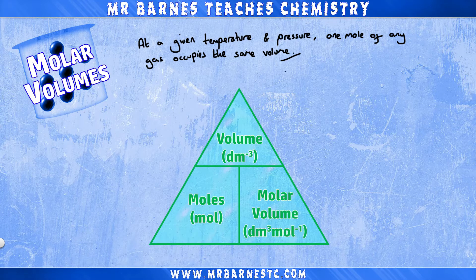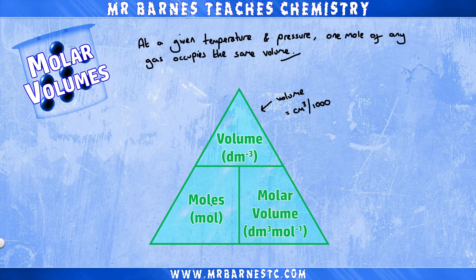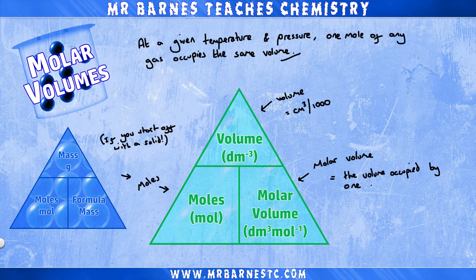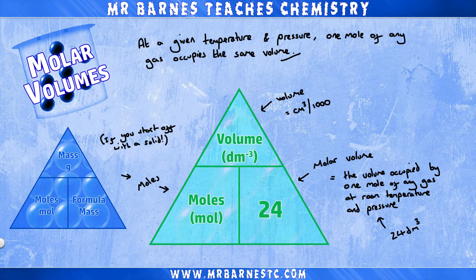To help you with any calculations around this, there's this magic triangle. It shows you volume in decimetres cubed — which is centimetres cubed divided by a thousand — moles in the bottom left corner, and then your molar volume, which is the volume occupied by one mole of any gas at room temperature and pressure: 24 decimetres cubed for every gas.